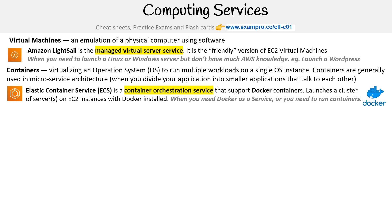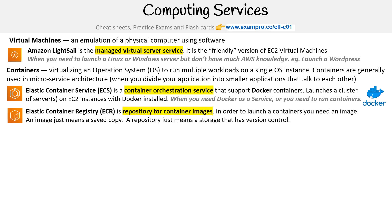ECS is a container orchestration service that supports Docker containers and launches a cluster of servers on EC2 instances with Docker installed. So when you need Docker as a service or need to run containers, we have Elastic Container Registry, ECR. This is a repository of container images. In order to launch a container you need an image — an image is a saved copy, and a repository is storage that has version control.